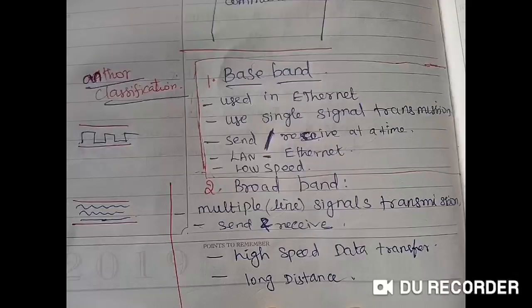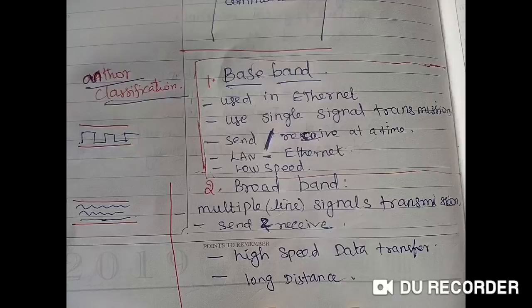Baseband is used in a small area. It uses a single transmission over a cable to transfer data, and a single signal is used to either send or receive data.